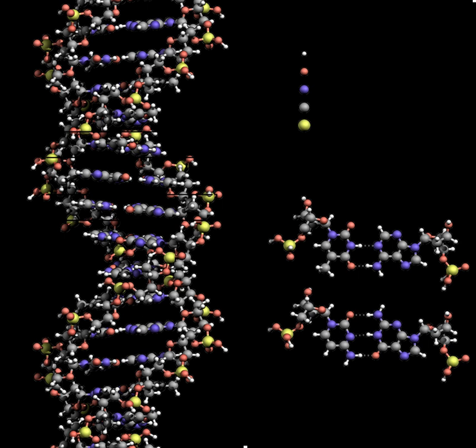Within eukaryotic cells, DNA is organized into long structures called chromosomes. Before typical cell division, these chromosomes are duplicated in the process of DNA replication, providing a complete set of chromosomes for each daughter cell. Eukaryotic organisms store most of their DNA inside the cell nucleus and some in organelles, such as mitochondria or chloroplasts.